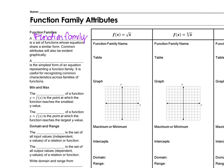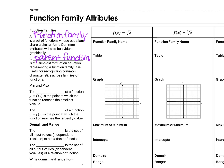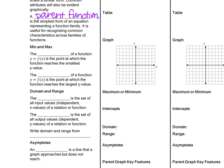Common attributes will also be evident graphically. A parent function is the simplest form of an equation representing that function family — quadratic, square root, cube root, whatever that function family may be. It is useful for recognizing common characteristics among your families. A min and a max: the minimum of a function y equals f of x is the point at which the function reaches the smallest y value. The maximum is the largest y value.